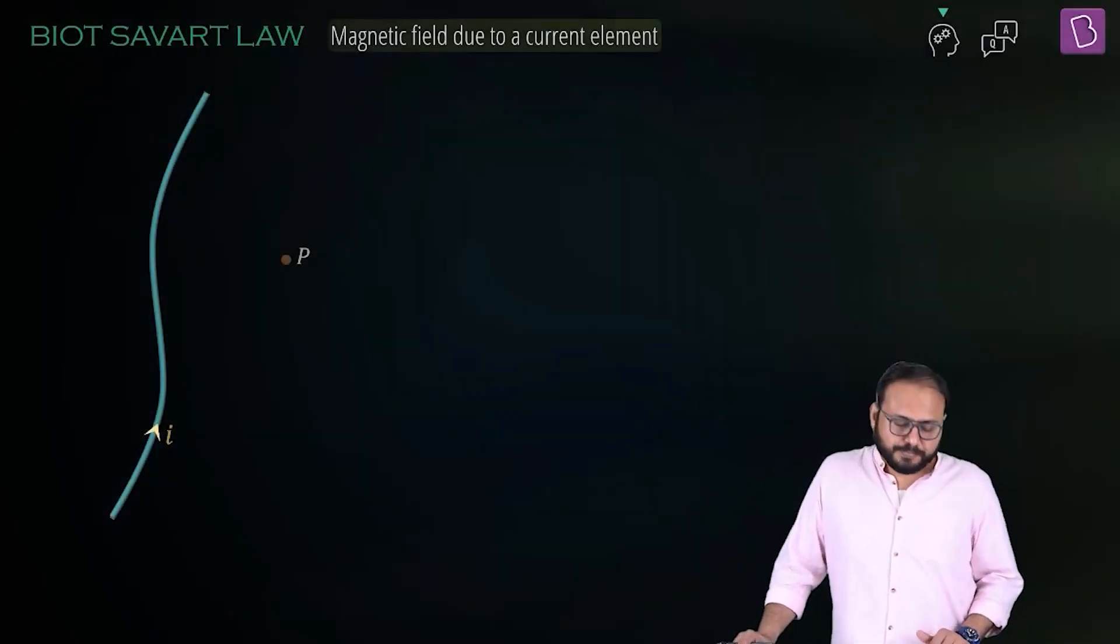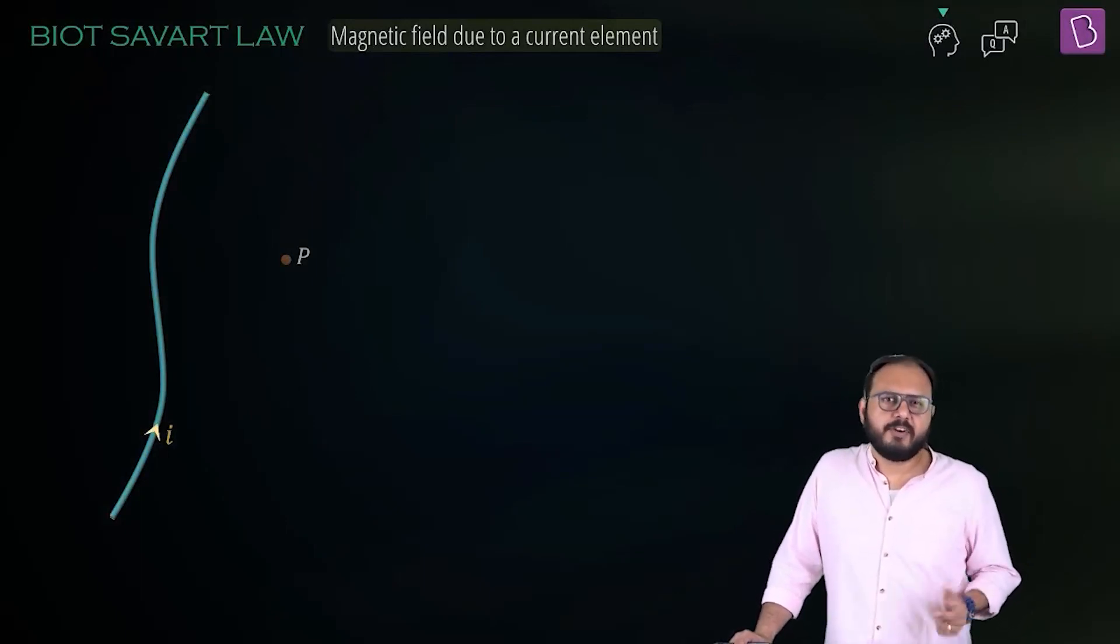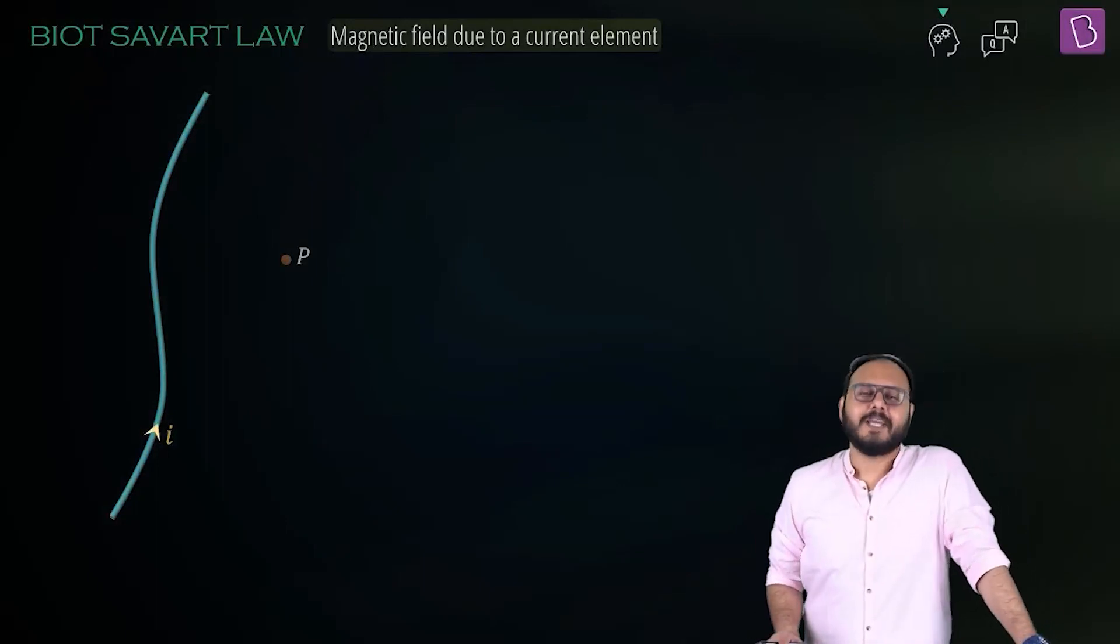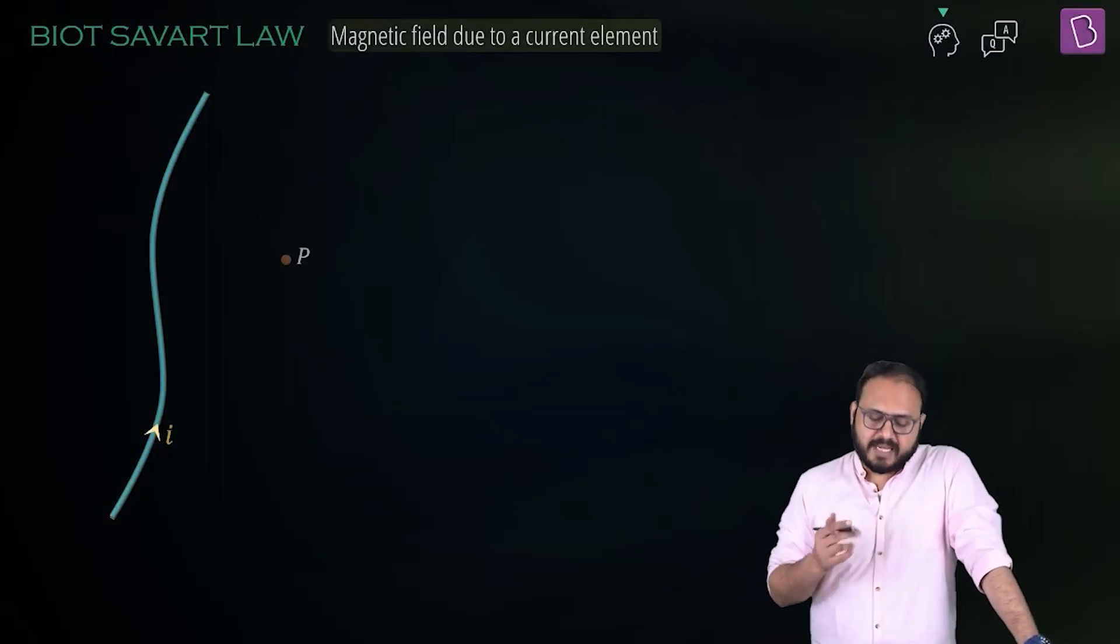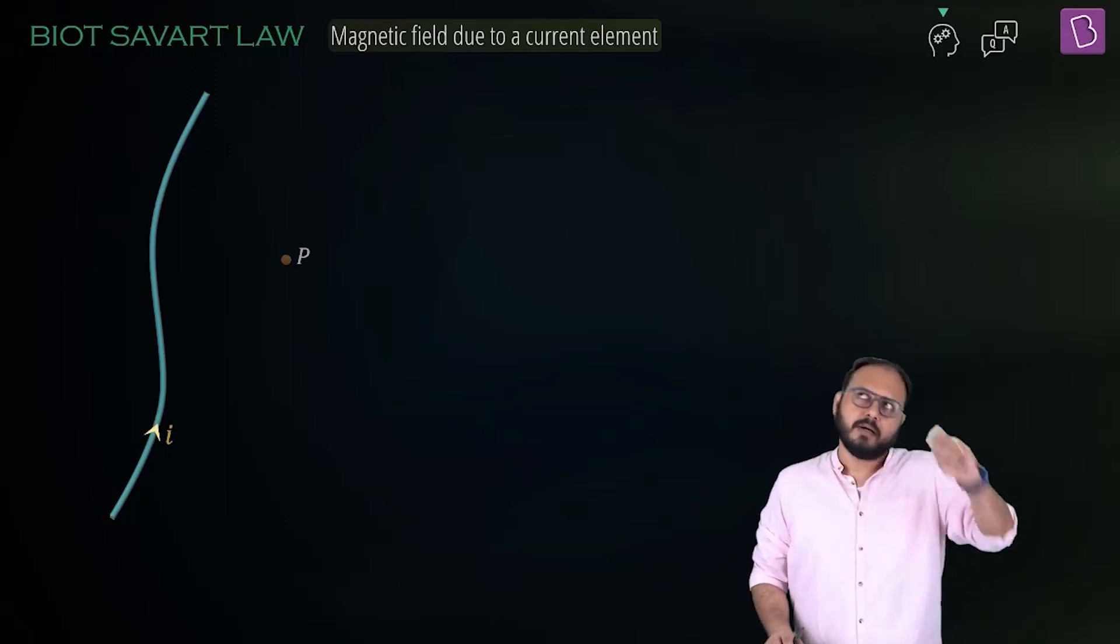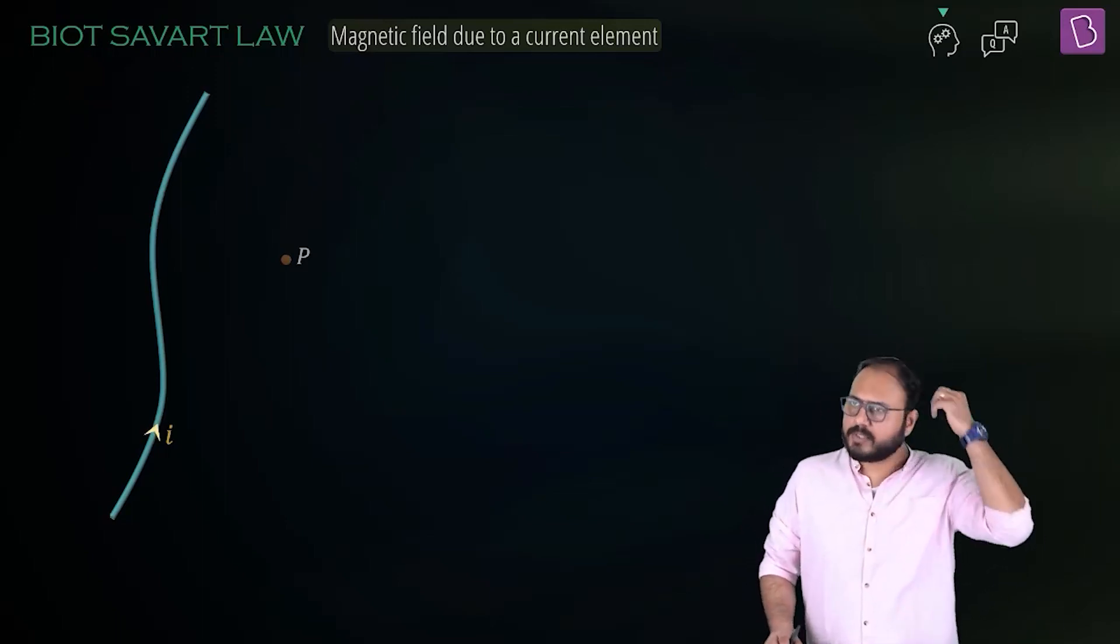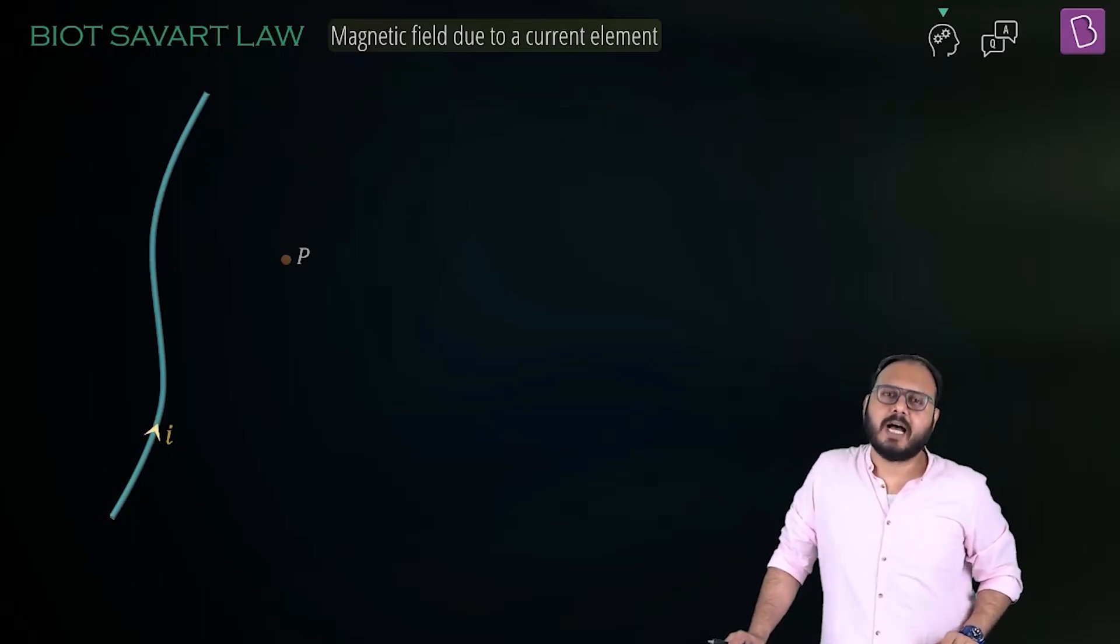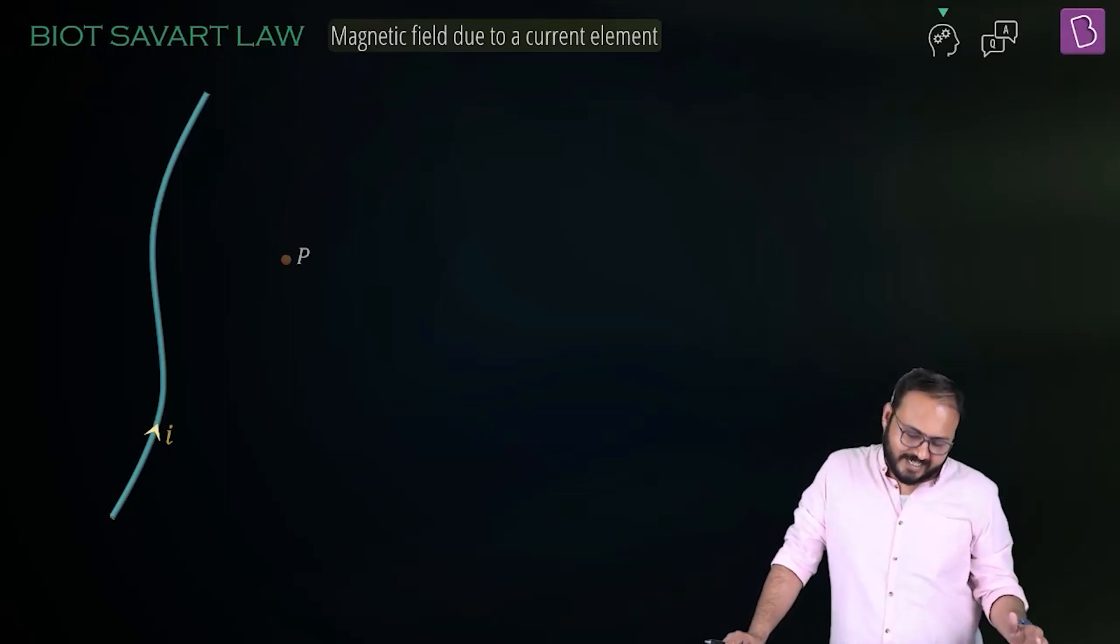Biot-Savart Law. There are many ways to pronounce this - different books pronounce it differently. But what does it say? It says magnetic field due to a current element. Hold on, I remember this word, current element. You said this is the most uncreative name you have heard because current is I, element is DL. So current element is IDL.